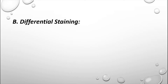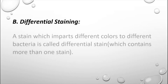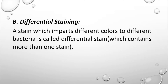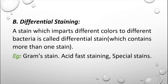The second subtype is differential staining, where we can differentiate cells on the basis of color. A stain that imparts different colors to different bacteria is called a differential stain — it contains more than one staining solution. The best example is the Gram staining technique, and the second is acid-fast staining, commonly using the Ziehl-Neelsen staining method. Other examples are special stains used to stain particular bacterial parts like flagella or spores, giving a specific color to that structure compared to the bacterial cell — that is why it is called differential staining.